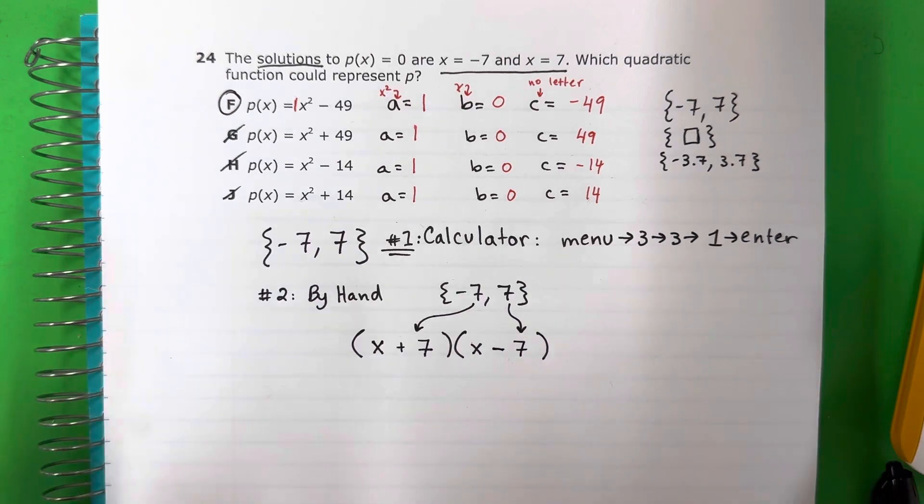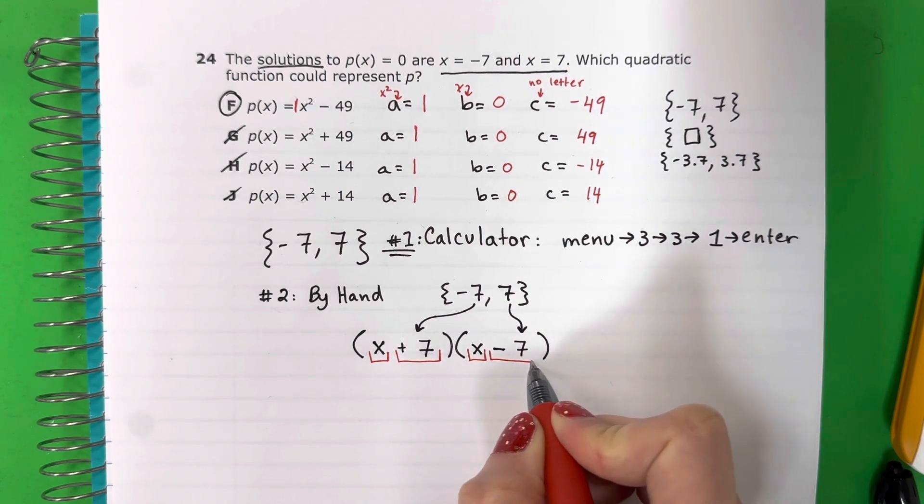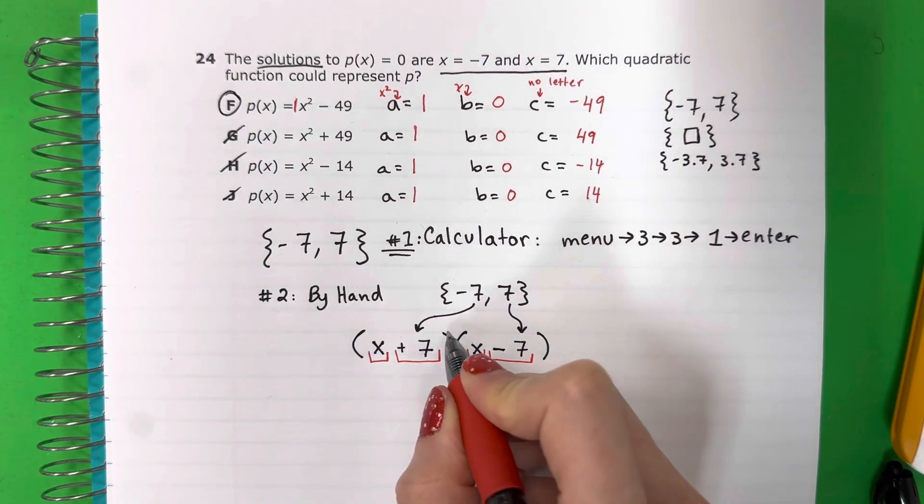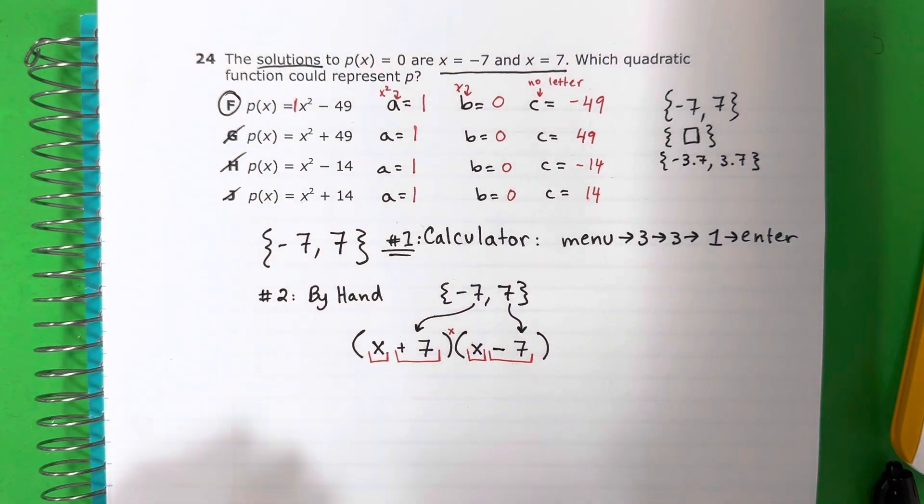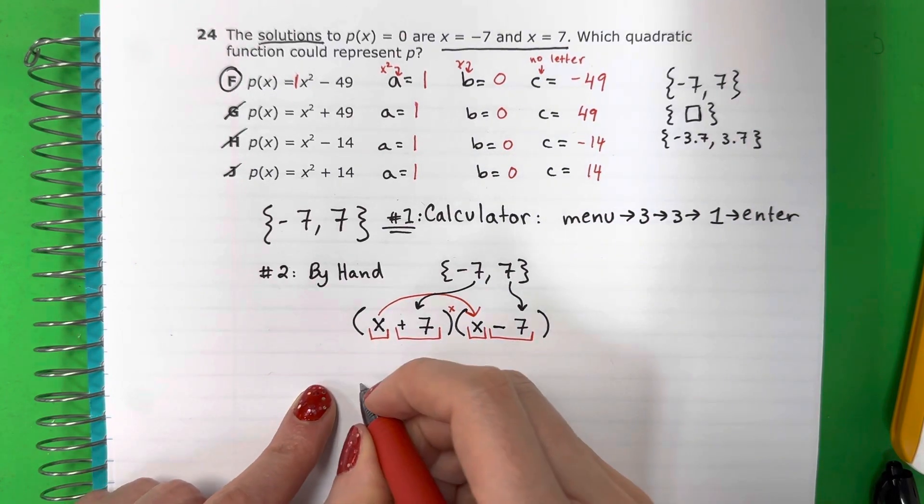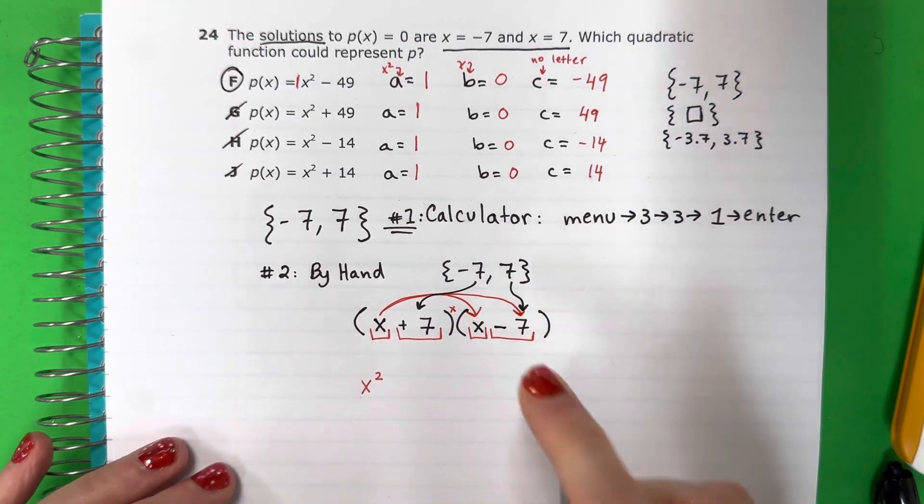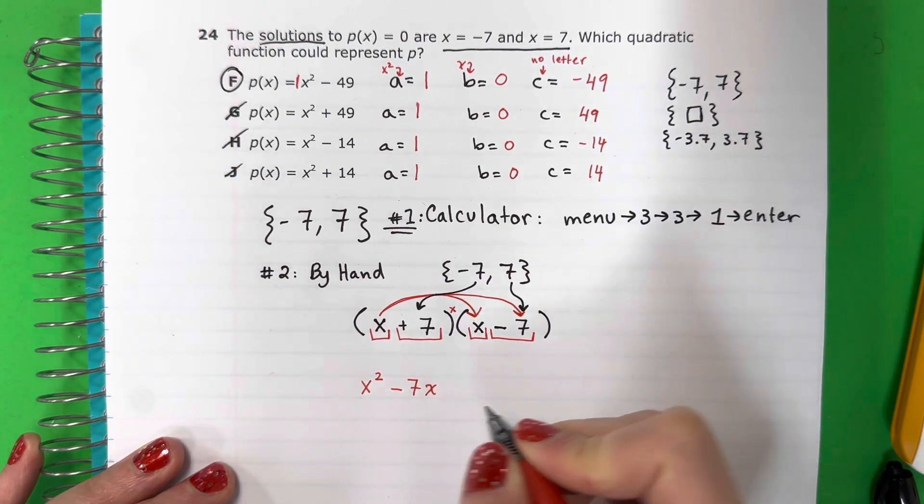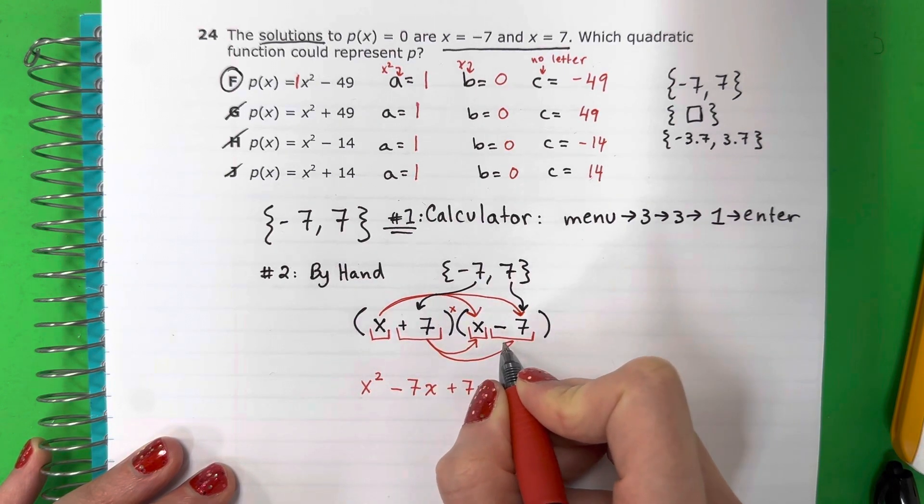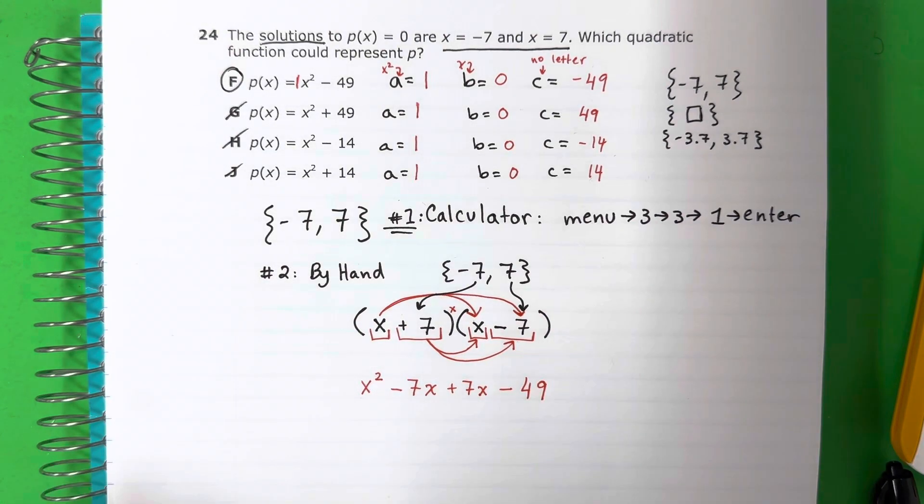Now we're going to multiply. Ahora vamos a multiplicar. I have four parts because parentheses multiply. X times X is X squared. X times -7 is -7X. 7 times X is positive 7X. 7 times -7, if you put in the calculator, is -49.